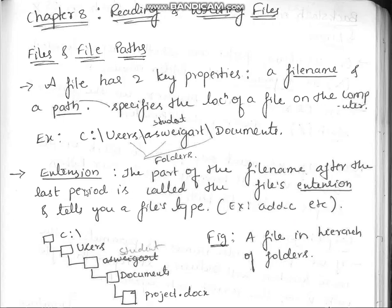The part of the file name after the last dot is called the file extension, and it tells us what type of file it is. For example, 'add.c' means 'add' is the file name and '.c' means it is a C programming file. Similarly, a Python file uses '.py', and an object file uses '.obj'.